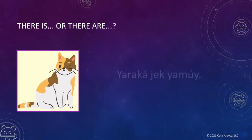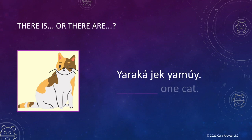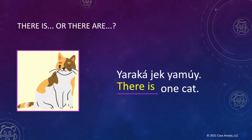Let's do a few examples. Let's take a look at this first picture — the picture gives me a clue. Now let's look for context clues. The word that follows yara ka is hek, and I know that means one. So what does yara ka mean in this case? Yara ka means 'there is' because we are talking about one or less. Now let's read the sentence aloud: Yara ka hek ya mui. There is one cat.